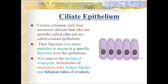Ciliated epithelium is similar to columnar epithelium but the cells have hair-like outgrowths called cilia - that's how it got its name. Its function is to move particles or mucus in a specific direction over the epithelium. It is seen in the trachea, windpipe, and bronchioles of the respiratory tract.